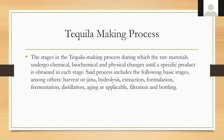Tequila production is unique because we're taking the heart of the piña and transforming it into alcohol. The process includes these basic stages: harvest or jima — the el jimador is the person who harvests the piña, his tool is called a coa, which he uses to cut off the leaves and get to the center of the heart called the piña. Then you have hydrolysis, extraction, formulation, fermentation, distillation, aging, and filtration and bottling.